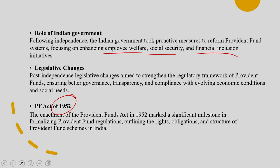What was critical in the 1952 Act was the principle of mandatory coverage. The Act made participation in the EPF scheme compulsory for all establishments employing a minimum number of workers - the threshold has been categorically revised over time. This ensured broader coverage and a more secure financial future for a larger segment of society. The scheme adopted a contributory model, specifically requiring both employers and employees to contribute, creating a sense of ownership and shared responsibility that ensured substantial corpus accumulation.